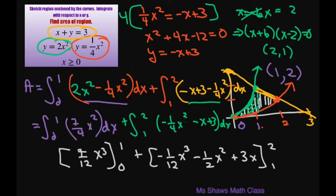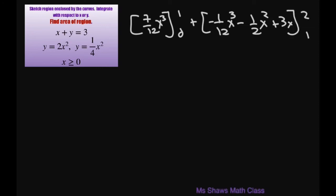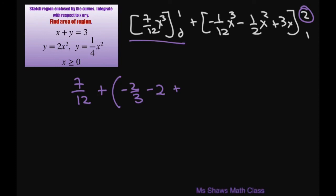Let's integrate this and we'll get 7/12 x cubed, evaluating from 0 to 1, plus negative 1/12 x cubed minus 1/2 x squared plus 3x, evaluating from 1 to 2. So let's do this piece: this piece is just going to be 7/12 and then minus 0. Then plus — for x equals 2 you get negative 2/3 minus 2 plus 6. Then minus, substituting in 1, you get negative 1/12 minus 1/2 plus 3.